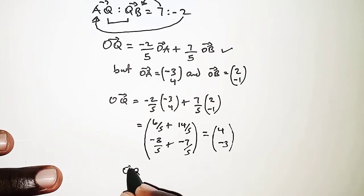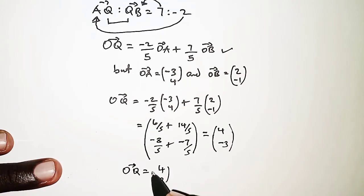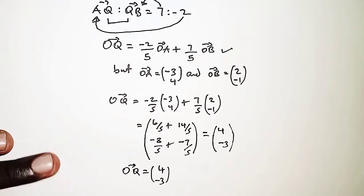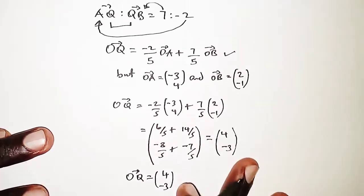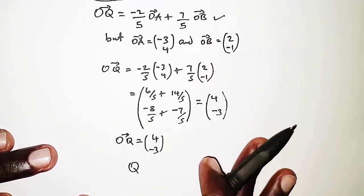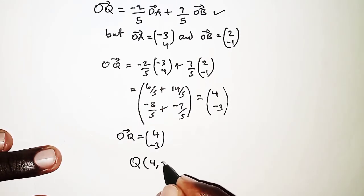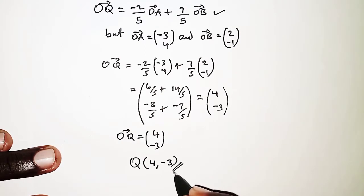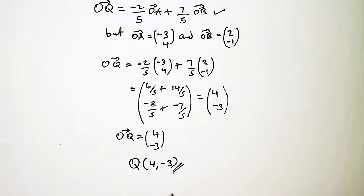So finally, OQ is given as the column vector (4, -3). Because we are interested in the coordinates of point Q, we write this as Q = (4, -3). This is the final answer to the problem. Thanks for your patience, see you next time.